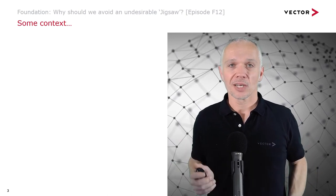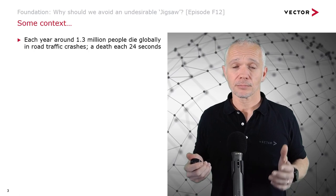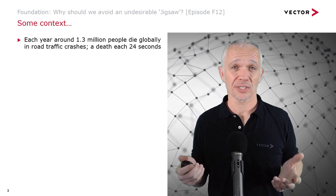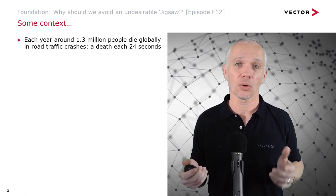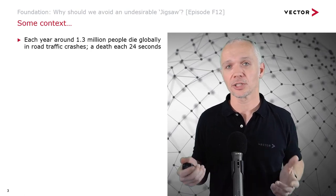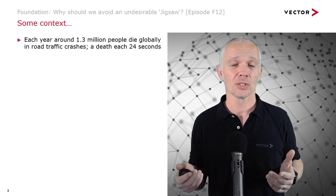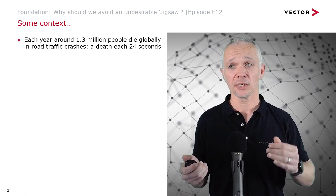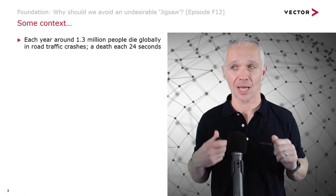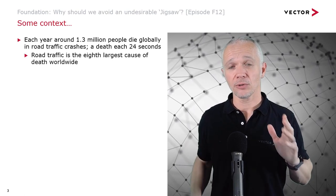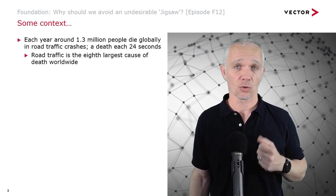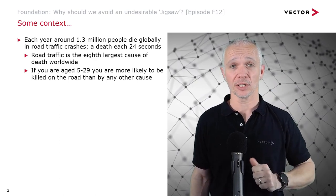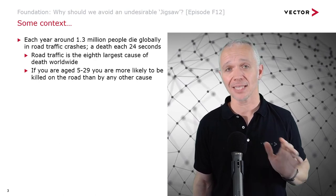Before we go too far, let's have some context. Each year around 1.3 million people die globally in road traffic crashes — that equates to a death every 24 seconds. Given a typical Engineering the Jigsaw episode is about 15 minutes long, that means nearly 37 to 38 people will die during the time it takes you to watch a single episode. Road traffic is the eighth largest cause of death worldwide, and in fact it is the number one killer for people aged 5 to 29.